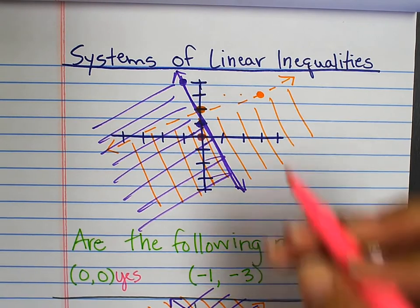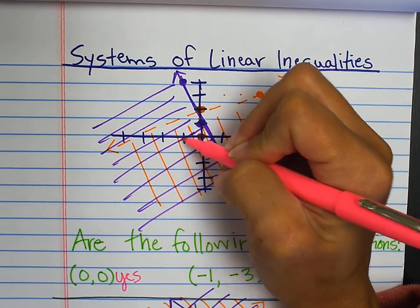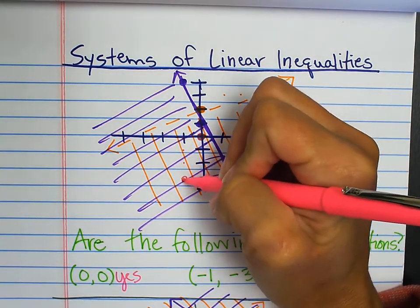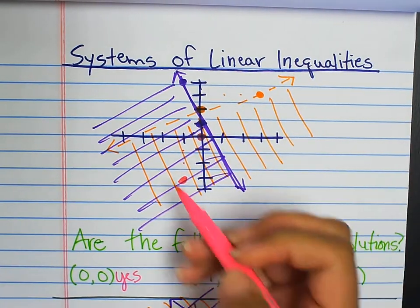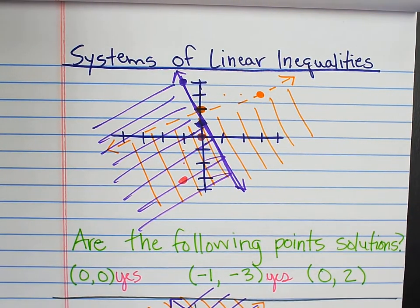Negative one, negative three. This is clearly in the double shaded region. It is a solution.